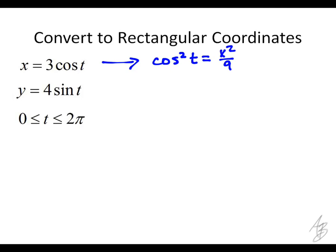And here I want to get sine squared of t by itself. This is a very useful identity, the Pythagorean identity. Sine squared of t is going to be what? y squared over 16. And so we know that sine squared of t plus cosine squared of t is going to be 1.